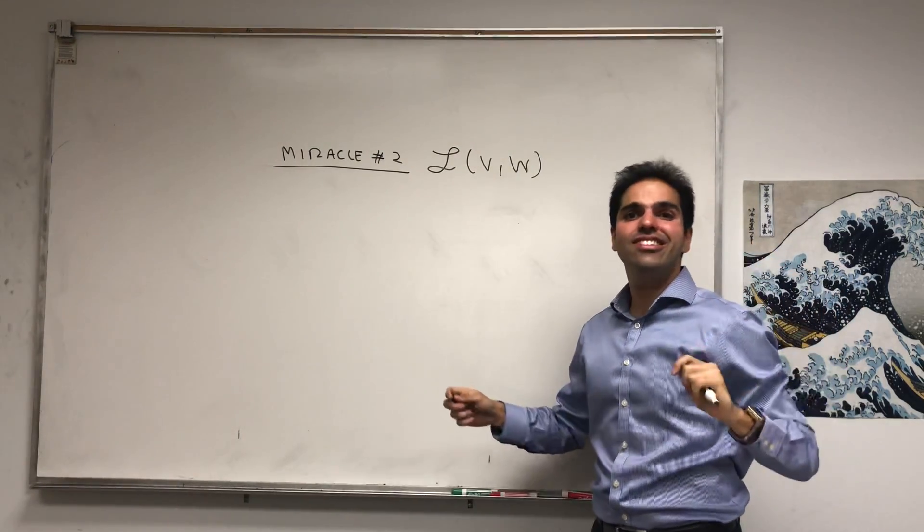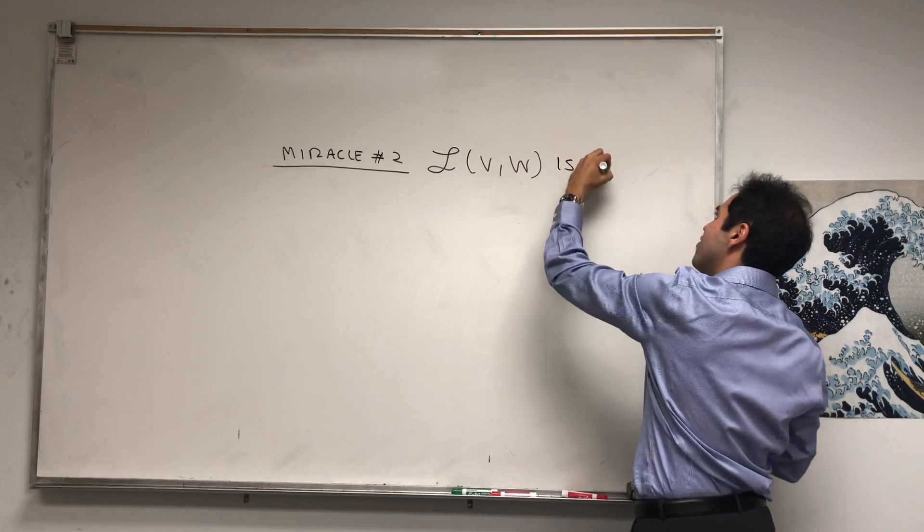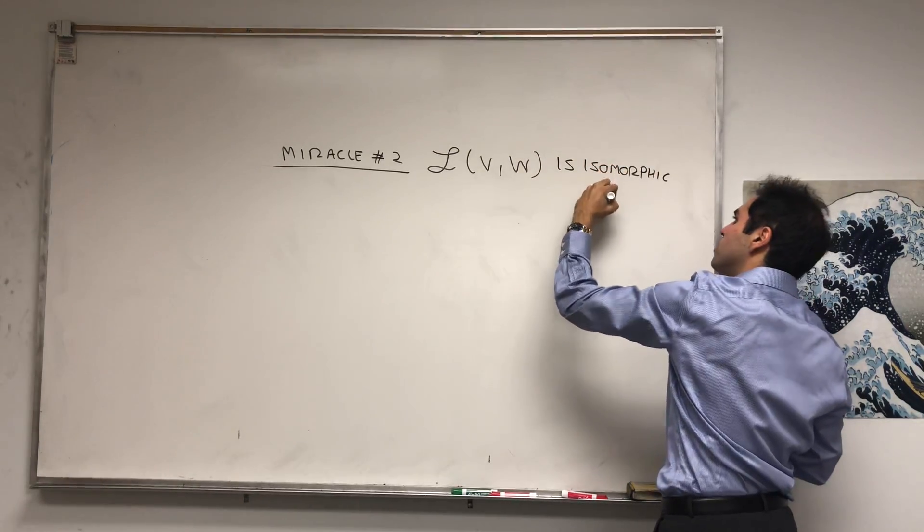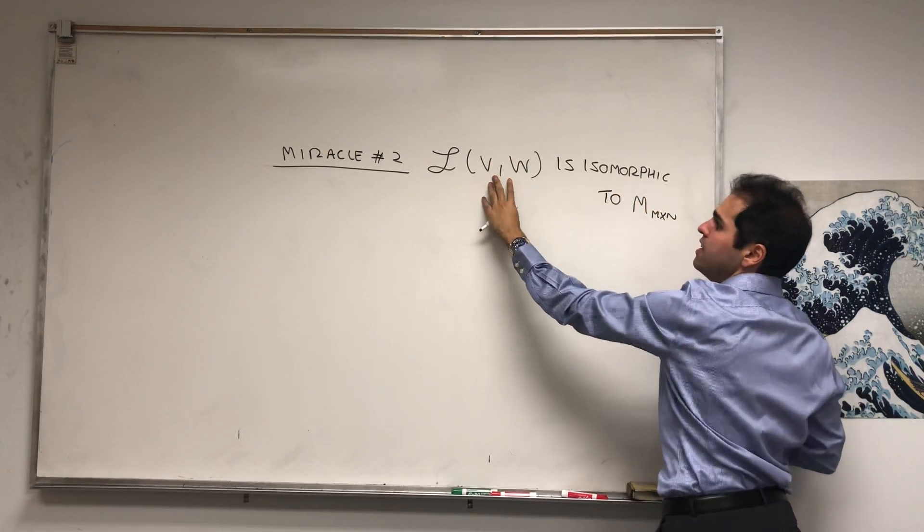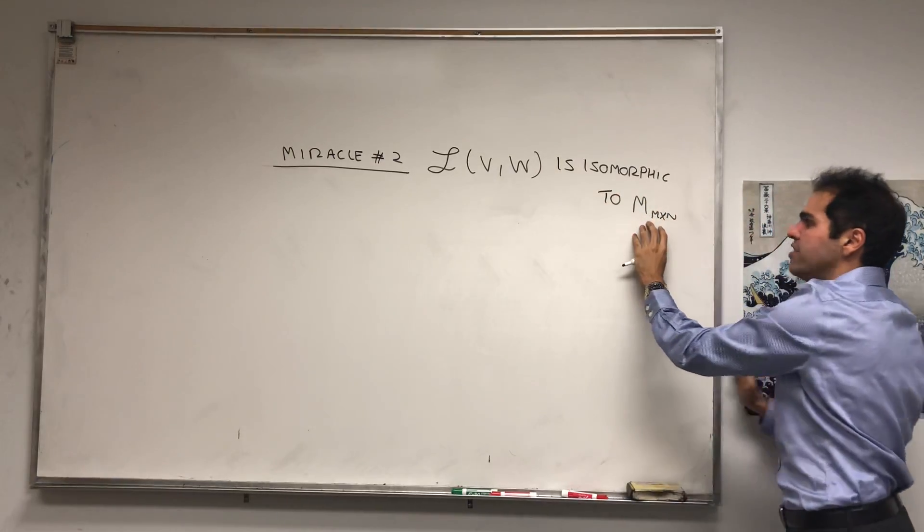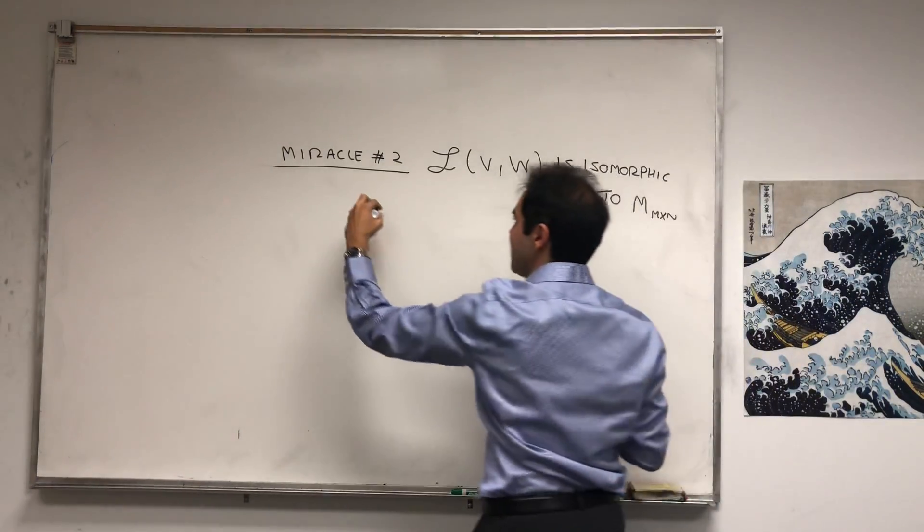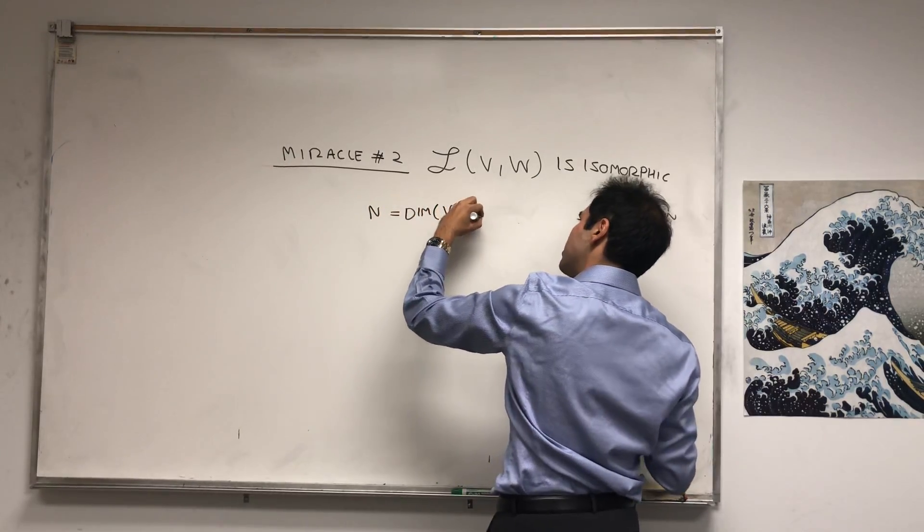In other words, for us, linear transformations are like matrices. Is isomorphic to M_m×n. So the set of linear transformations from V to W is isomorphic to a set of matrices. What is M? What is N? N, like input, N is the dimension of V.